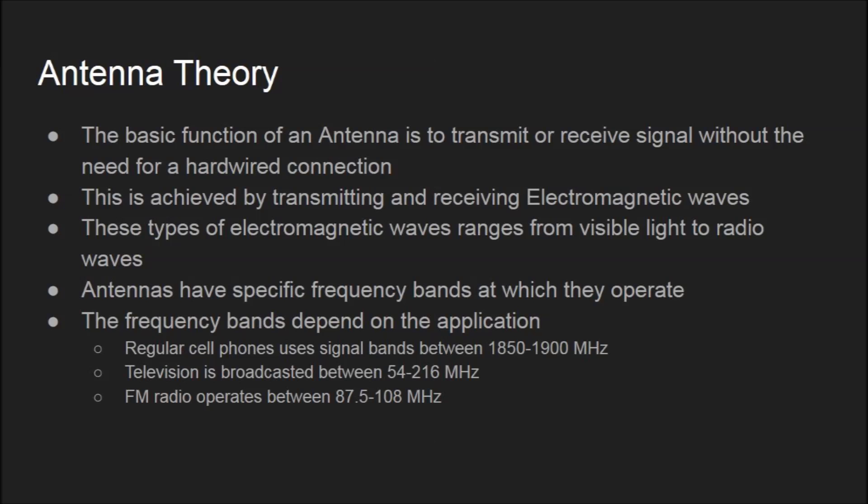So we'll start with general antenna theory. The basic function of an antenna is to transmit or receive a signal without the need for a hardwire connection. This is achieved by transmitting and receiving electromagnetic waves through the air. These types of electromagnetic waves range from visible light to radio waves. Antennas have a very specific frequency of bands at which they operate, and the frequency of the bands depends on the application.